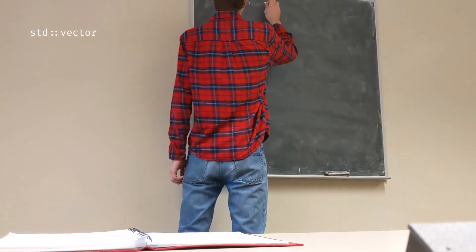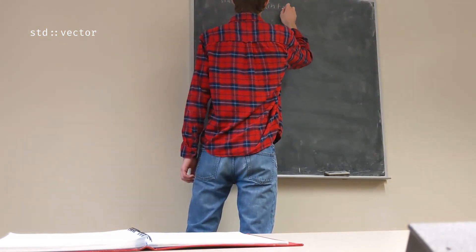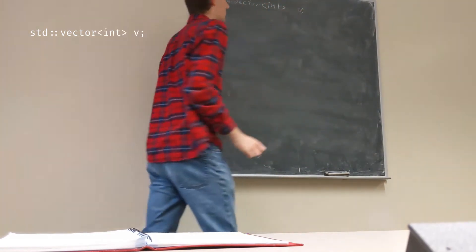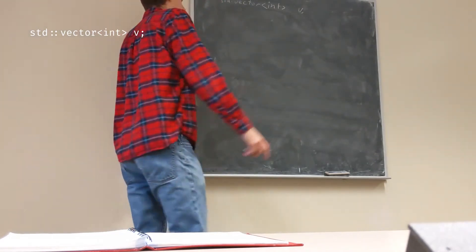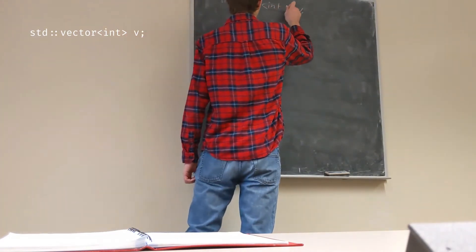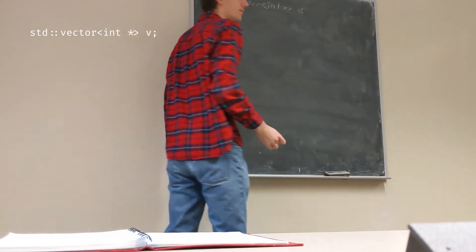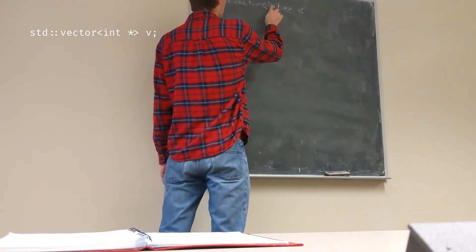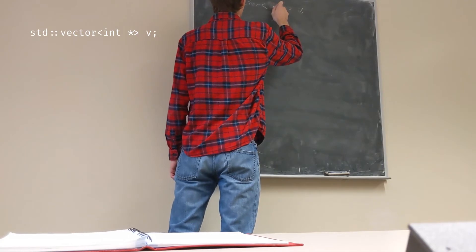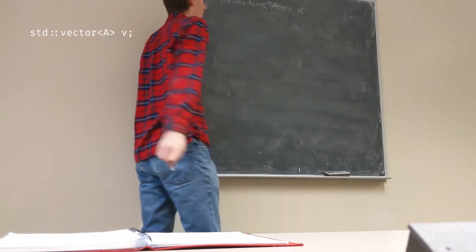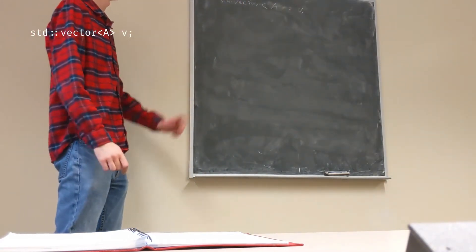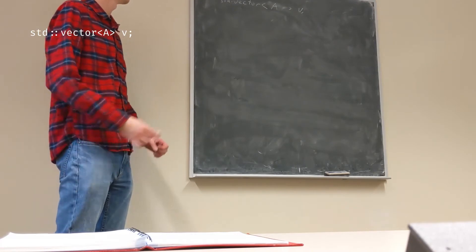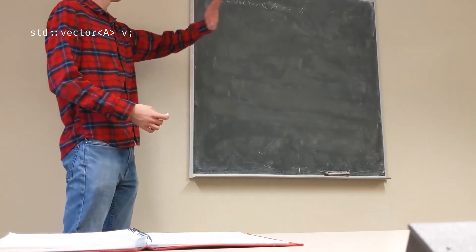So if you want to get a vector of ints, that's how we can declare it. We also have a vector of, say, int pointers. We also have a vector of, I don't know, like A. If A is some custom type, we have a pointer to A. Basically, any type, you can just throw it in there.